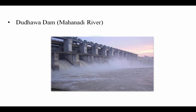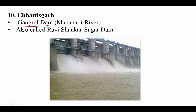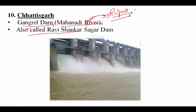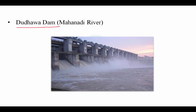From Chhattisgarh, remember two dams, both on the Mahanadi river. The Mahanadi originates from Raipur district of Chhattisgarh. First is Gangrel Dam, also known as Ravi Shankar Sagar Dam — if you see 'Ravi Shankar,' think Chhattisgarh. Second is Dudhwa Dam, which also frequently appears in exams. Both Gangrel and Dudhwa are on the Mahanadi river.